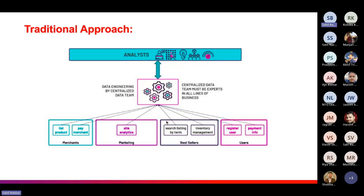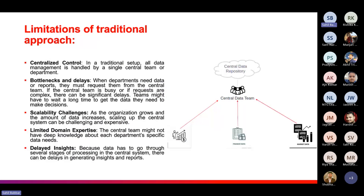Let us see some other limitations of the traditional approach. In traditional data setup, all data management is handled by a single data team, so it is very difficult to manage all tasks. Regarding bottlenecks and delays — when departments need data or reports, they must request them from the central data team. If the central data team is busy or if requests are complex, there might be significant delays. If there are complex queries for one department while other departments are also in line to get data, it will be difficult for the central data team to handle multiple tasks simultaneously.